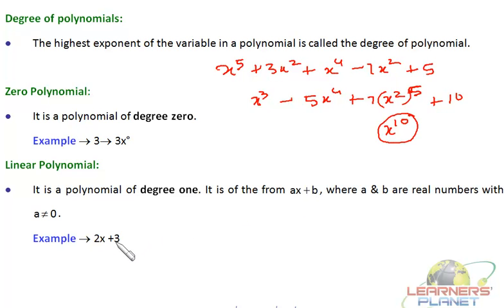Let's take an example: 2x plus 3, we can say 5x minus 3, 4x plus 2, 6x minus half. All of these are in the form of ax plus b and these are known as linear polynomials.